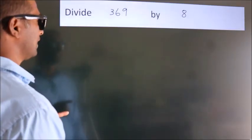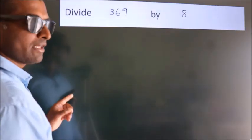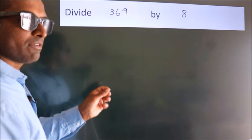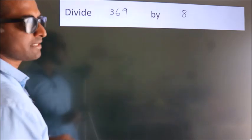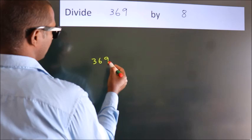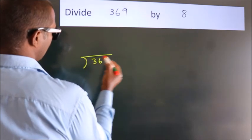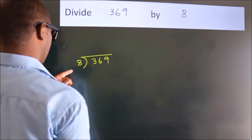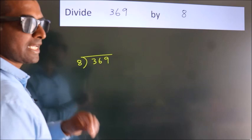Divide 369 by 8. To do this division, we should frame it in this way. 369 here, 8 here. This is your step 1.